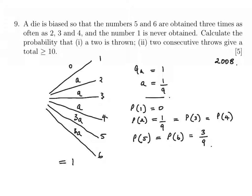Let's answer part one: what's the probability that a two is thrown? We've seen that the probability of getting a two is one over nine.